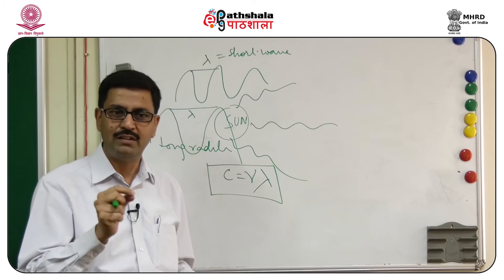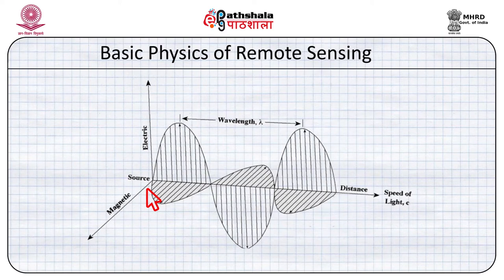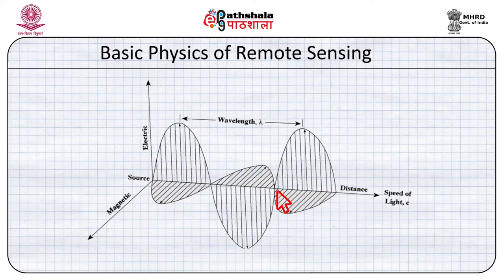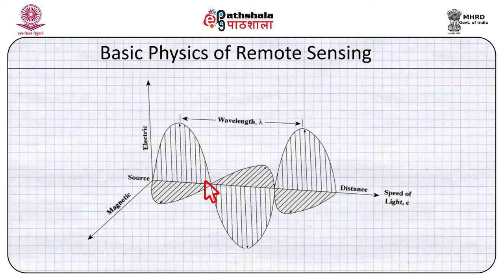The sun's energy travels in the form of a wave. From one node to another node is called the wavelength, that is lambda. If energy is hot, the distance of lambda will be less. If the energy is low, the distance of lambda will be long. To calculate the speed of light, we use the formula C = νλ, where C is the speed of light, that is 3 × 10^10 meters per second.